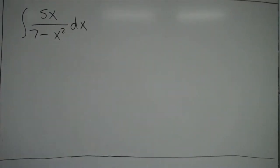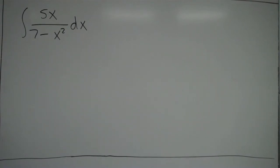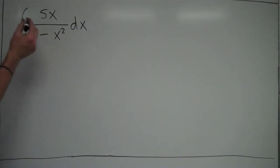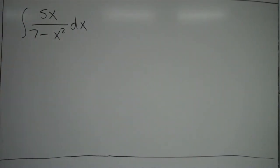Let's take a look at another example, using our natural log x rule to find antiderivatives. With the natural log rule, if the derivative of the bottom equals the top, you can apply the rule — it's just the natural log of the absolute value of the bottom.